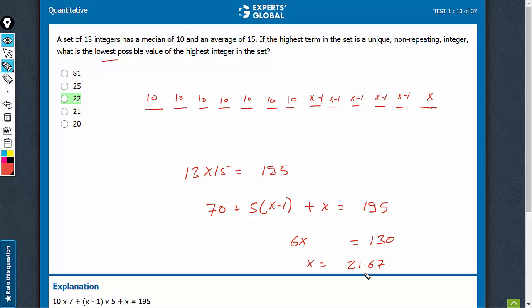But we are dealing with integers, therefore it has to be an integer. So we have to round it off. Remember, 21.67 is the lowest possible value. So while rounding it off, we round it off on the higher side, 22. We are rounding it off on the higher side, not because 22 is closer to 21.67. We are doing so because 21.67 is the lowest possible value.